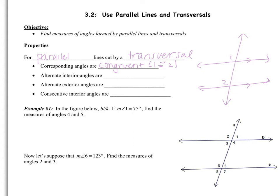Alternate interior angles are also congruent. So the alternate interior to angle 2 would be angle 3 — they're on opposite sides of the transversal and in between the two lines, so angle 2 is congruent to angle 3. Alternate exterior angles are also congruent. Looking at angle 1, angle 4 would be the alternate exterior — they're both outside the two lines on different sides of the transversal, so angle 1 is congruent to angle 4.